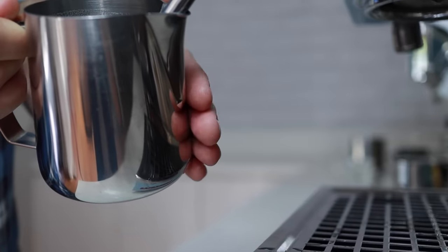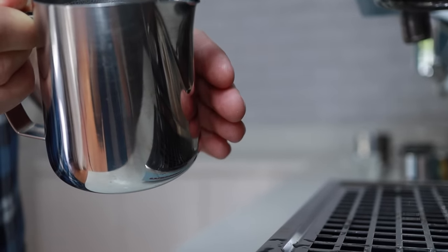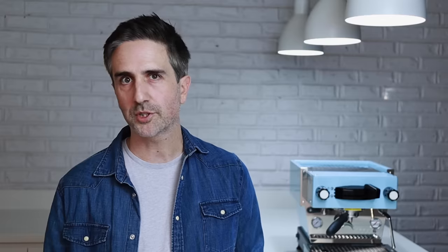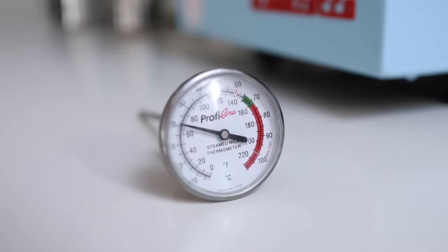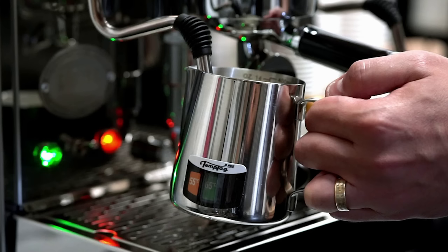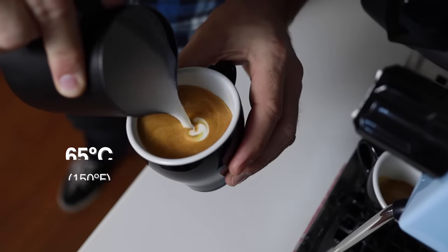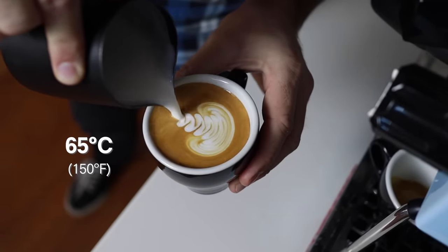Now when the bottom of the jug is too hot to touch, we want to turn off the steam. If you like a more measured approach to temperature, then you can use a thermometer like this. Or my pick is to use a temperature sticker that changes colour when the milk hits 65 degrees. Of course, you can heat it a little more or less, but it tastes and works best at around 65 degrees Celsius.